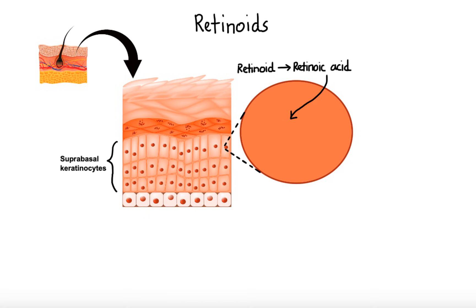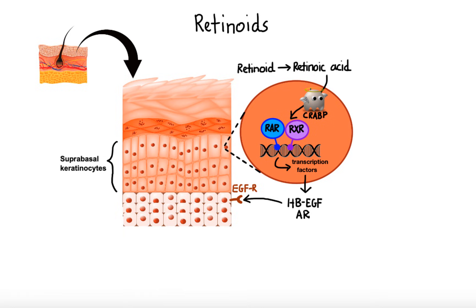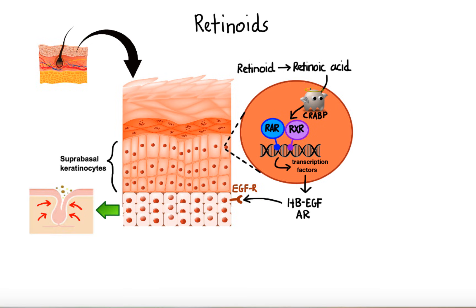Retinoic acid is then shuttled by cellular retinoic acid binding protein into the nucleus, where it binds to either retinoic acid receptors or retinoid X receptors. These retinoic acid-bound receptors then bind to so-called retinoic acid response elements on target genes, causing activation of transcription factors. These in turn activate the synthesis of heparin-binding epidermal growth factor and amphiregulin, which through interaction with epidermal growth factor receptor cause proliferation of basal keratinocytes, thereby inducing thickened epidermis. Through this action, retinoids promote shedding of keratinized mature and dead skin cells at the surface, which leads to expulsion of mature comedones and suppression of microcomedone formation.